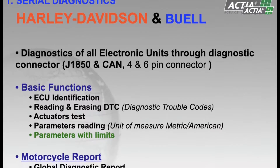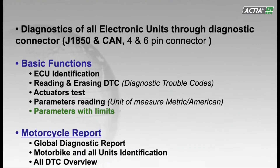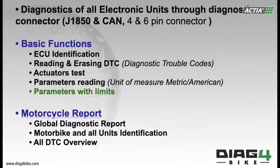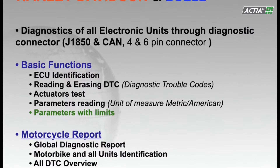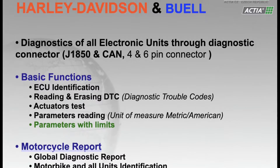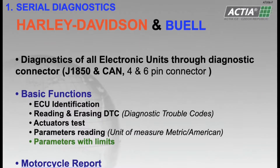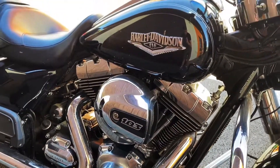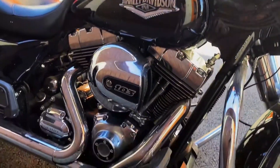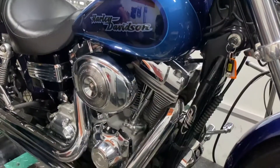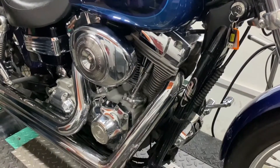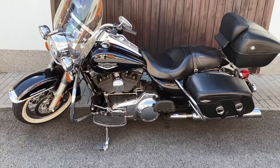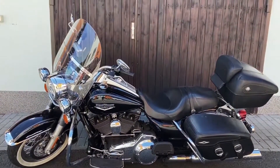Diag4Bike almost exclusively displays information provided by the motorcycle's control unit, which is then relayed to the connector of the control unit. That means, for example, that if the diagnostics discover a record of a fault of the engine's temperature sensor, the sensor does not necessarily have to be faulty. The fault may also be in the cabling leading from the sensor to the control unit's connector, or in the connector itself.